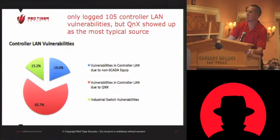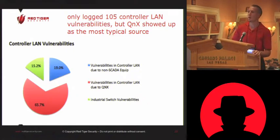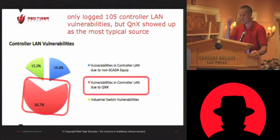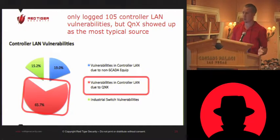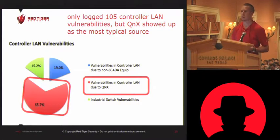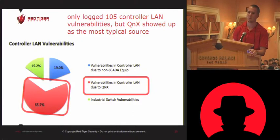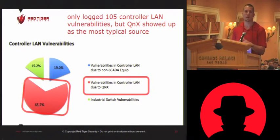Moving down to the controller side, you think about what vulnerabilities are in the embedded devices actually controlling the plant processes — boiler control systems, PLCs, RTUs — those aren't Microsoft. Those are typically VxWorks or QNX, some type of really lightweight operating system. We found that 65% of the vulnerabilities in the controller network were due to QNX, which is a large standard that many embedded devices are built on. We also found non-SCADA equipment on the SCADA system — video surveillance, VoIP, and card access systems — all running over the same logical network as the SCADA traffic.